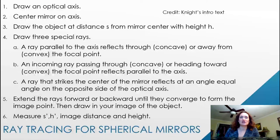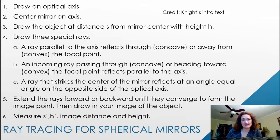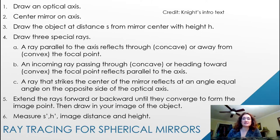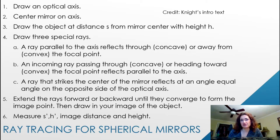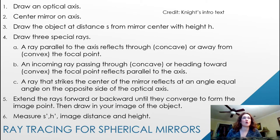To figure out what images are formed from spherical mirrors, you can do a ray diagram similar to the ones we did for thin lenses. Just like for thin lenses, I'm going to break down into steps how to draw these ray diagrams for mirrors. This is adapted from Knight's introductory physics textbook.